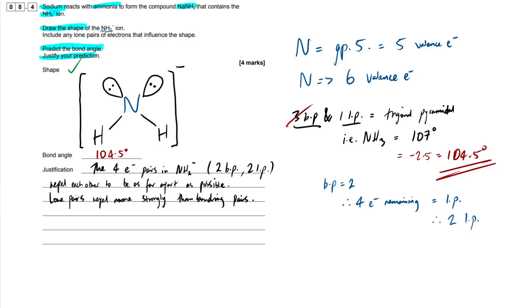However, what we need to know here is that lone pairs always, always repel more strongly than bonding pairs. So these lone pairs right here are going to repel more strongly like I explained here. They're going to actually repel more strongly by roughly 2.5 degrees. That's essentially how it works here. Just try and remember that number and you should be completely fine.